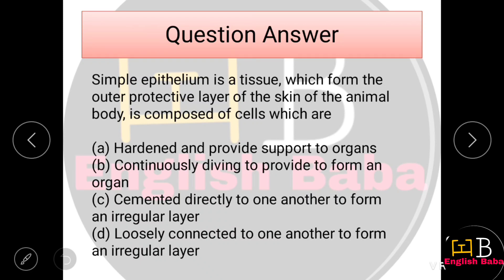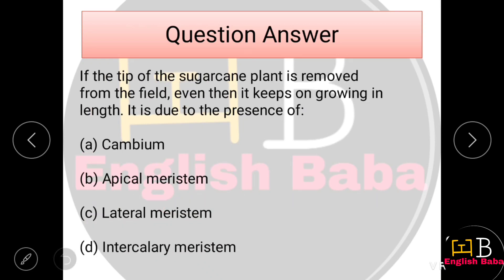If the tip of a sugarcane plant is removed from the field, it still keeps on growing in length. It is due to the presence of intercalary meristem. Option D is correct.